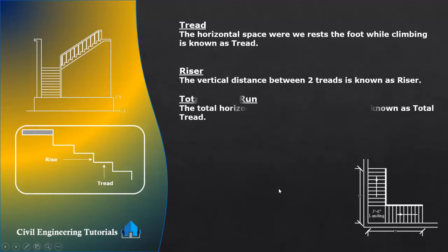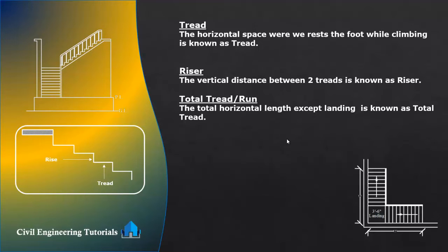Now what is total tread or total run? The total horizontal length except the landing is known as total tread or total run. That means total staircase length minus landing equals total tread. We need to deduct the landing from the total staircase length to get the total tread or total run.